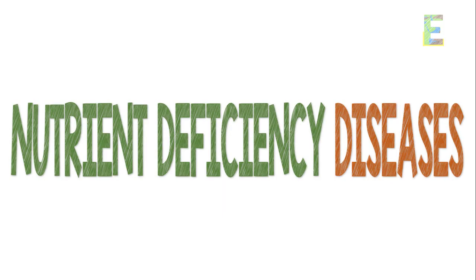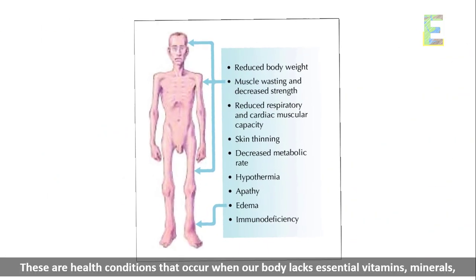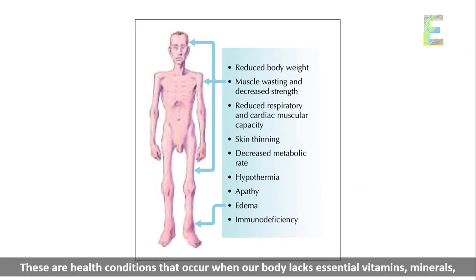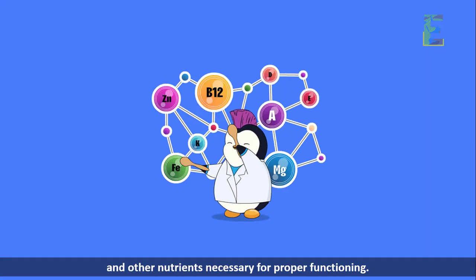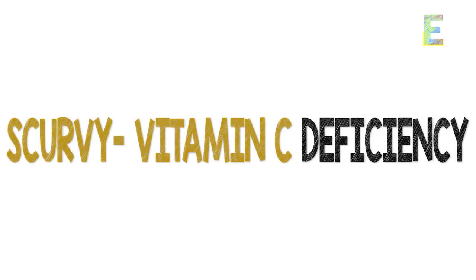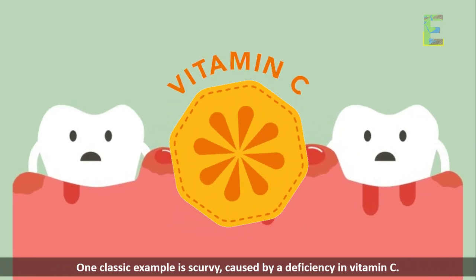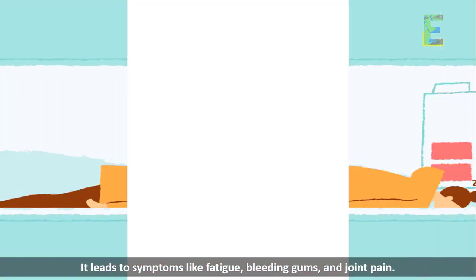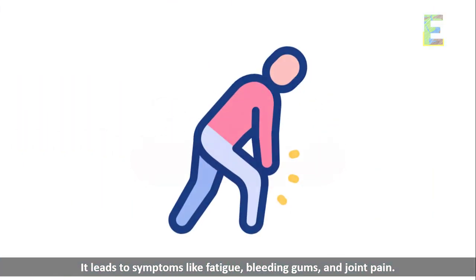Let's start with nutrient deficiency diseases — health conditions that occur when our body lacks essential vitamins, minerals, and other nutrients necessary for proper functioning. One classic example is scurvy, caused by a deficiency in vitamin C. It leads to symptoms like fatigue, bleeding gums, and joint pain.